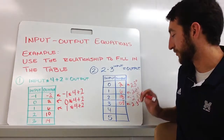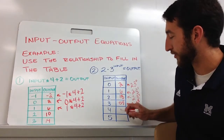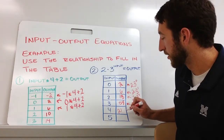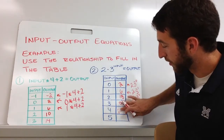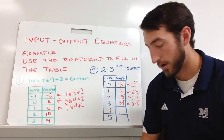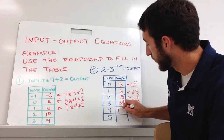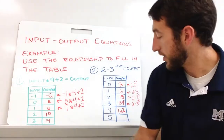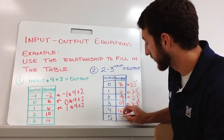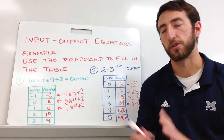Two times three to the third power: twenty-seven times two is fifty-four. Then two times three to the fourth power — let me grab my calculator, this is getting too big. That one is 162, not 214 — sorry, 162. And the next one should be 486. So that's just plugging those numbers in to get your output.